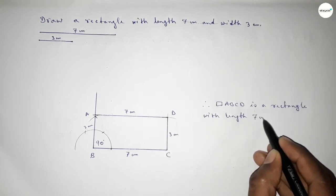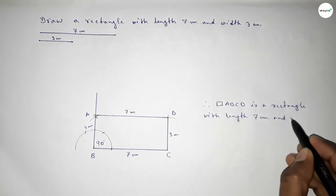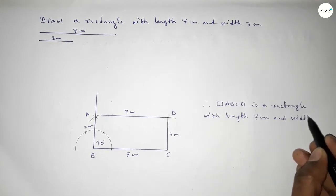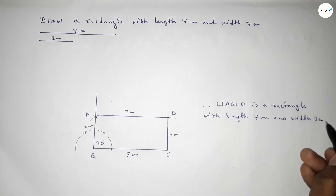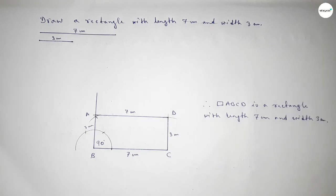Therefore rectangle ABCD is a rectangle with length 7 centimeter and breadth or width 3 centimeter. That's all — thanks for watching. If this video is helpful to you, please share it with your friends.